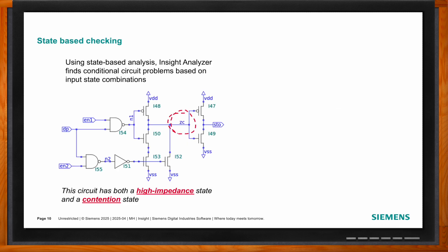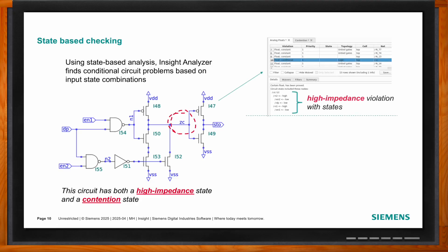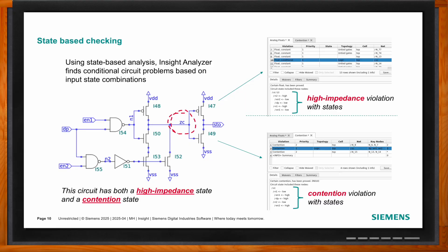The state-based checking technology provides the foundation, and all users are finding a lot of value in the tool. Just recently, a user found 10 real circuit problems during a tape-out from just running the most basic check for power contentions — finding simple voltage and connectivity issues. That's not even including the more complex state-based analysis for things like conditional floats, which are very difficult to find with conventional simulation and test vectors.